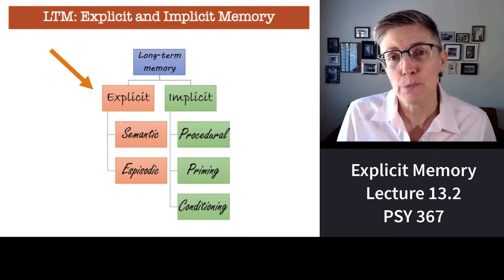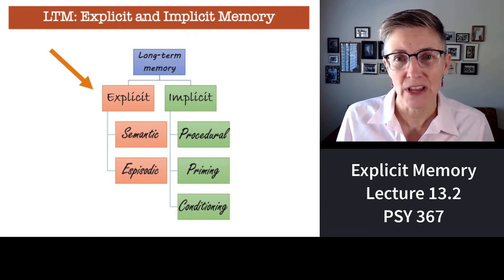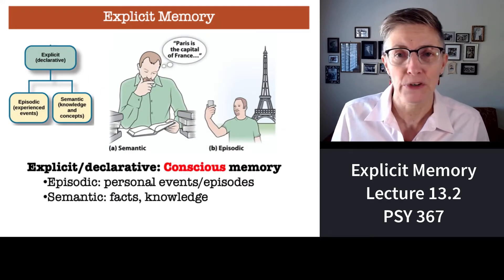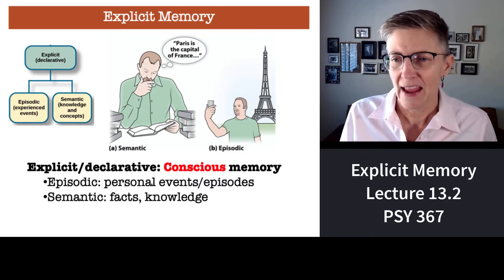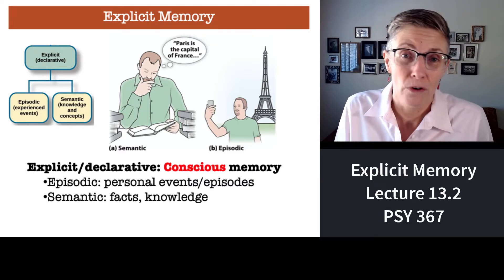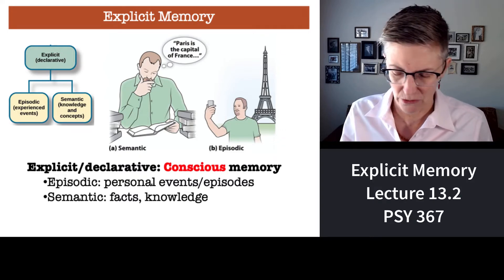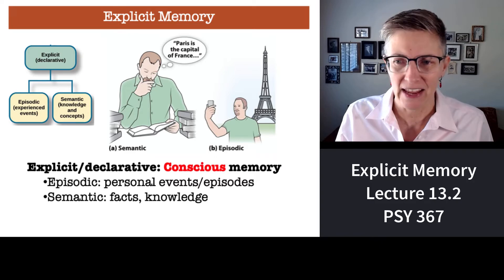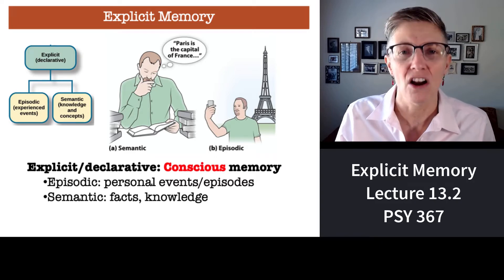Welcome back. We're going to talk about explicit memories — memories that you can consciously recall. There are two major types of explicit memories: episodic memories, which are memories for episodes of your life, and semantic memories, which are your memories for facts, world facts, general knowledge. Both of those types of memories you can consciously recall.